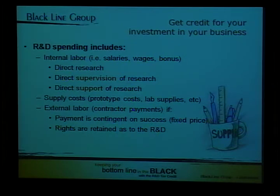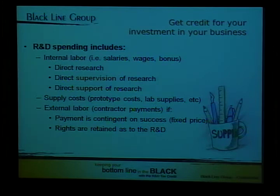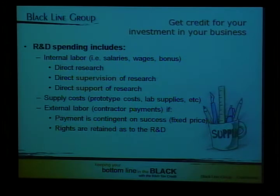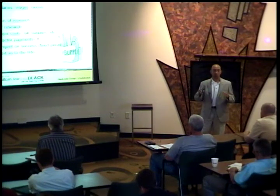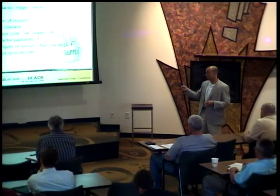The first cost, and by far the biggest cost — the largest component of just about every company's R&D tax credit — are the wages of the people within the business that are touching the R&D tax credit process. When trying to quantify this number, the first people you're going to look at are obviously the people directly doing the work, like your CAD programmer, your software developer, your tool makers. The people directly doing the work are obviously going to help you qualify for the R&D tax credit.